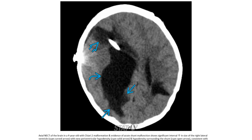This is the non-contrast CT of the brain in a four-year-old with Chiari malformation and evidence of a shunt malfunction, showing significant interval increase in the size of the right lateral ventricle with a new area of periventricular hypodensity and hypodensity surrounding the shunt, consistent with shunt malfunction.